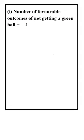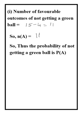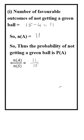Number of favourable outcomes for not getting a green ball is 15 minus 4, which is 11. So number of elements in event A is 11. Thus, probability of not getting a green ball is P(A) = number of A upon number of S = 11/15.